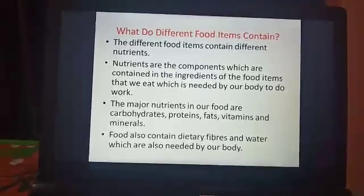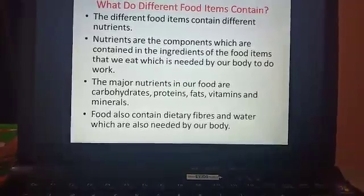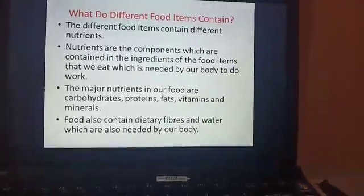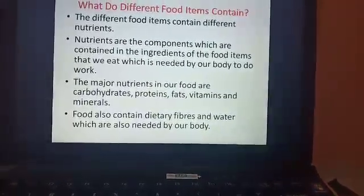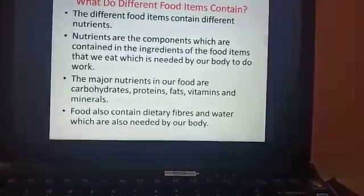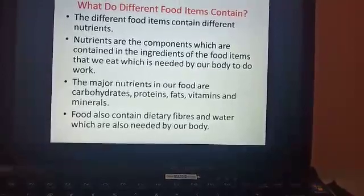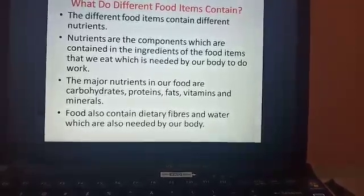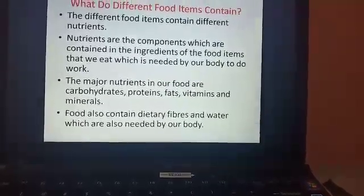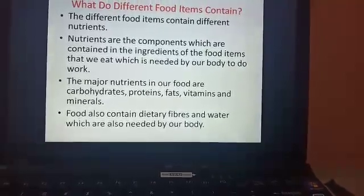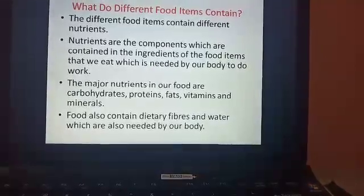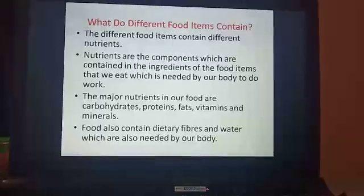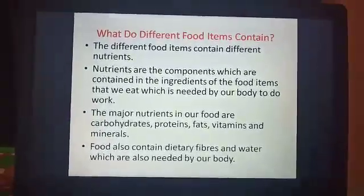The next topic is: what do different food items contain? Different food items contain different nutrients. As we learned in class 5, the different nutrients we require are carbohydrates, proteins, fats, vitamins and minerals. Nutrients are the components contained in the ingredients of the food items we eat, which are needed by our body to do work and carry out different functions. Other than these nutrients, food also contains dietary fibers and water, which are also needed by our body.